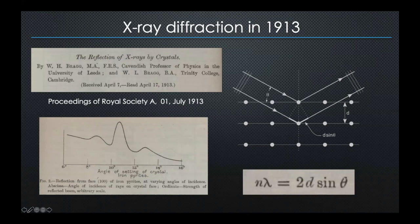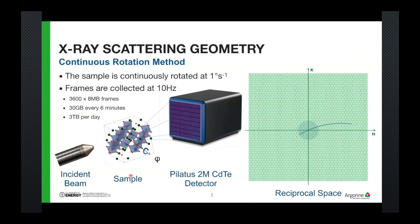The Bragg condition is simple and successful, but it was successful because the amount of information being captured was just the location of peaks — a small amount of information. But we want to understand defects, surface states, and different layers. So now we collect much more data than what Bragg and Bragg were doing.